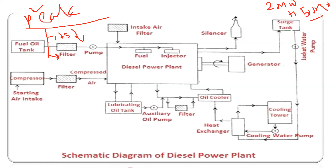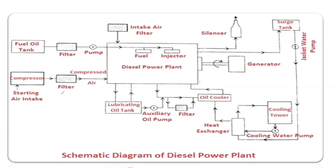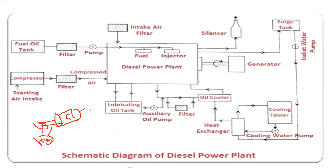The third and important point with respect to your diesel power plant is that whatever be the prime mover which is required to rotate the generator — this is your generator, this is your shaft — whatever be the prime mover required to rotate the alternator, a diesel engine is used as the prime mover.